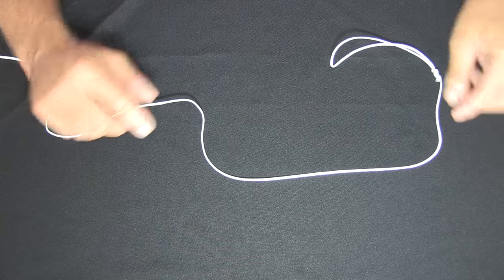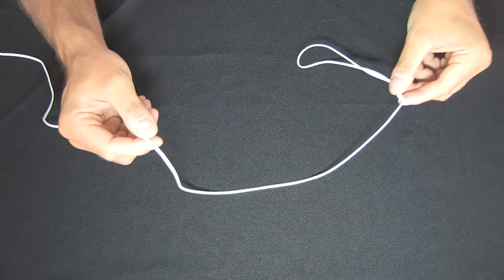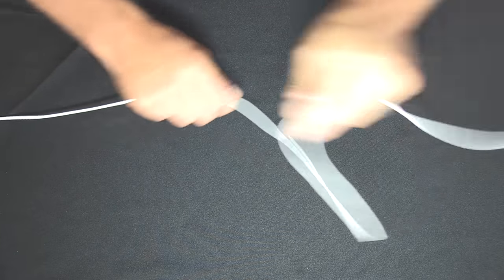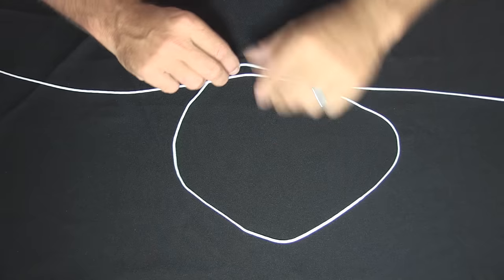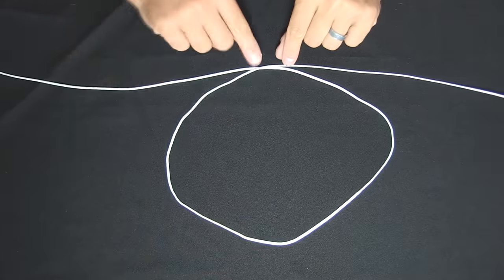Now to create our dropper loop we want to come up away from our sinker at a desired length that we'd like our hook to be away from our sinker. Then we create a large circle. The size of this circle will determine how far away your hook is from your knot.